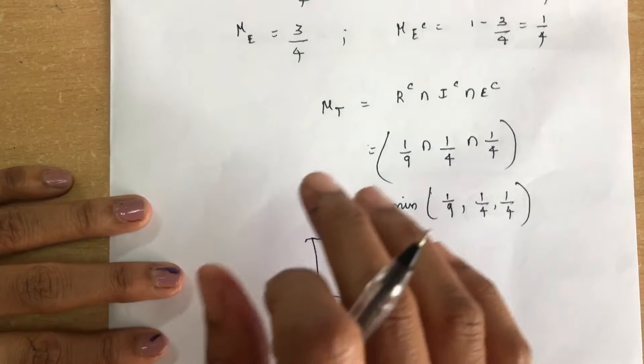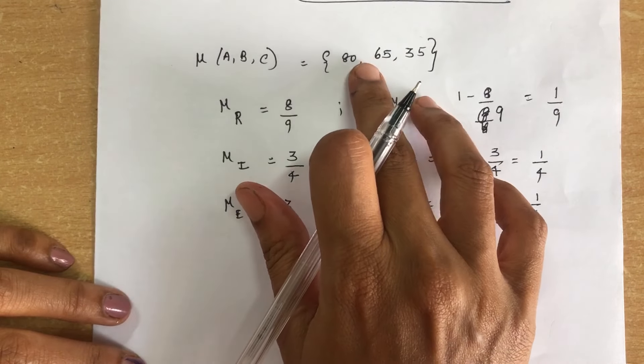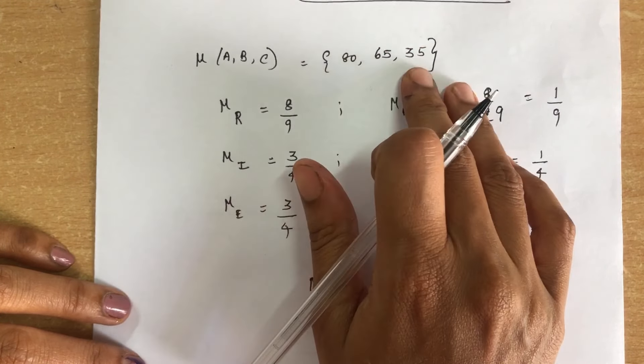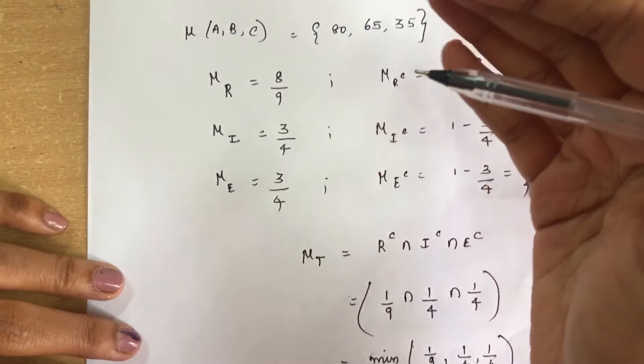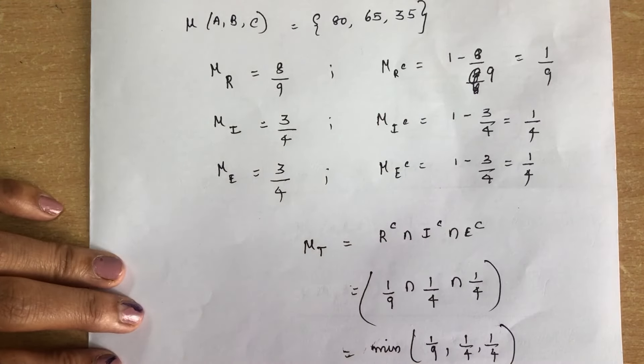Whenever any triangle is given, first check whether A > B and B > C, then apply the appropriate formula to find the membership values.